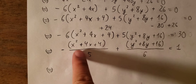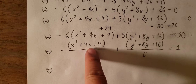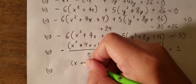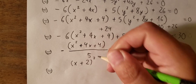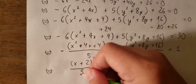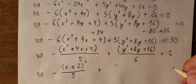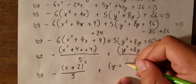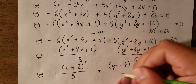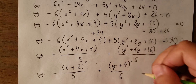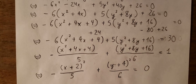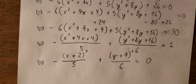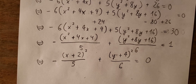Now we have (x + 2)² divided by 5, and (y + 4)² divided by 6, equal to 1. This is the standard form of the hyperbolic equation. We can now identify all the required values from this equation.